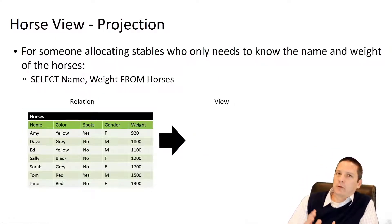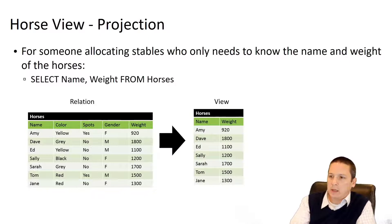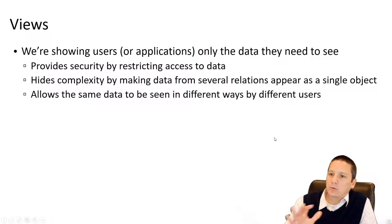Or if we were allocating horses to stables, we have small, medium, and large stables. We need to know the relative size of our horses. All we really need to know is the name and the weight. Whoever's doing the sorting doesn't care if the horse is yellow, brown, black, or white, or if it has spots or its gender. They just need the name and the weight. So we could create a view using our projection that returns a new relation with a reduced degree, simplifying things.